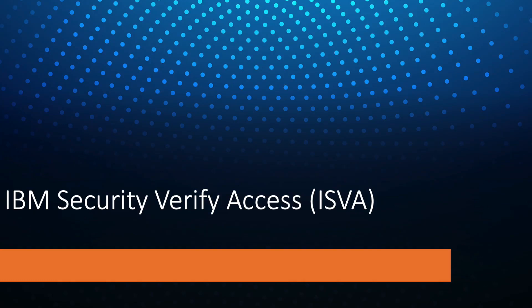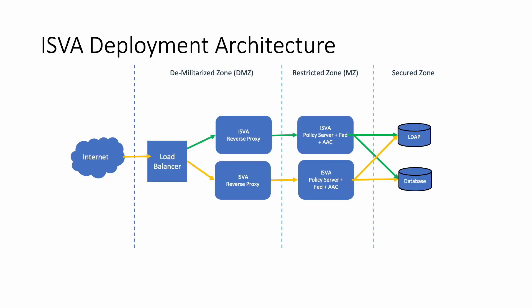Welcome to the second video in this series where we talk about the architecture of ISVA. ISVA consists of three major components: first is the reverse proxy, also known as WebSEAL or the policy enforcer; second is the policy server; and third is the LDAP server or user registry. We will talk more in detail about these components later in this video.